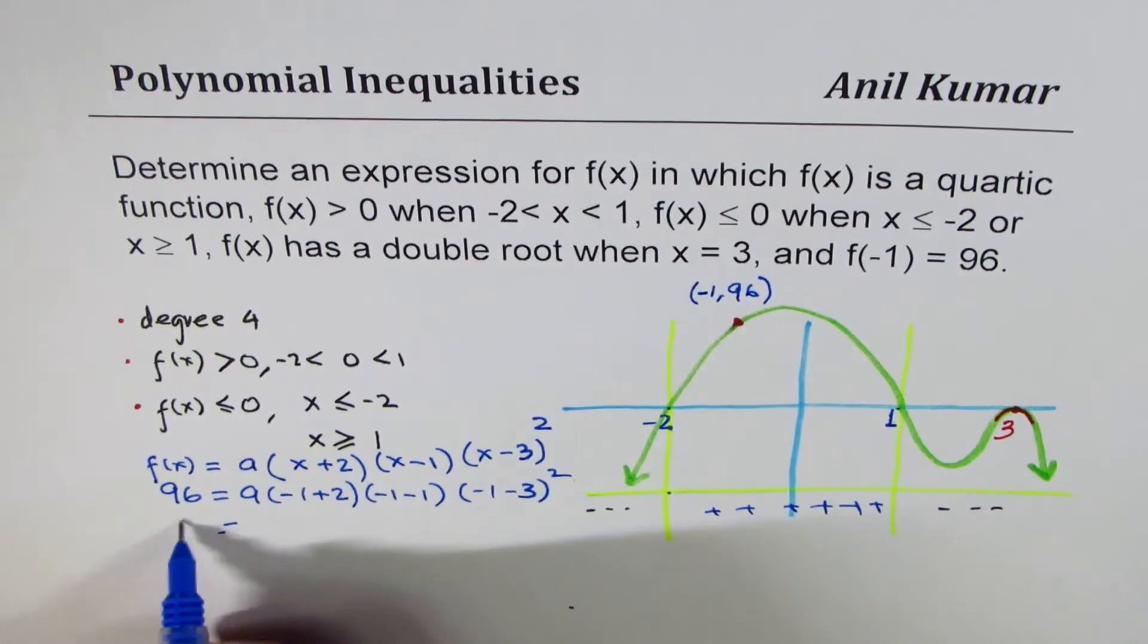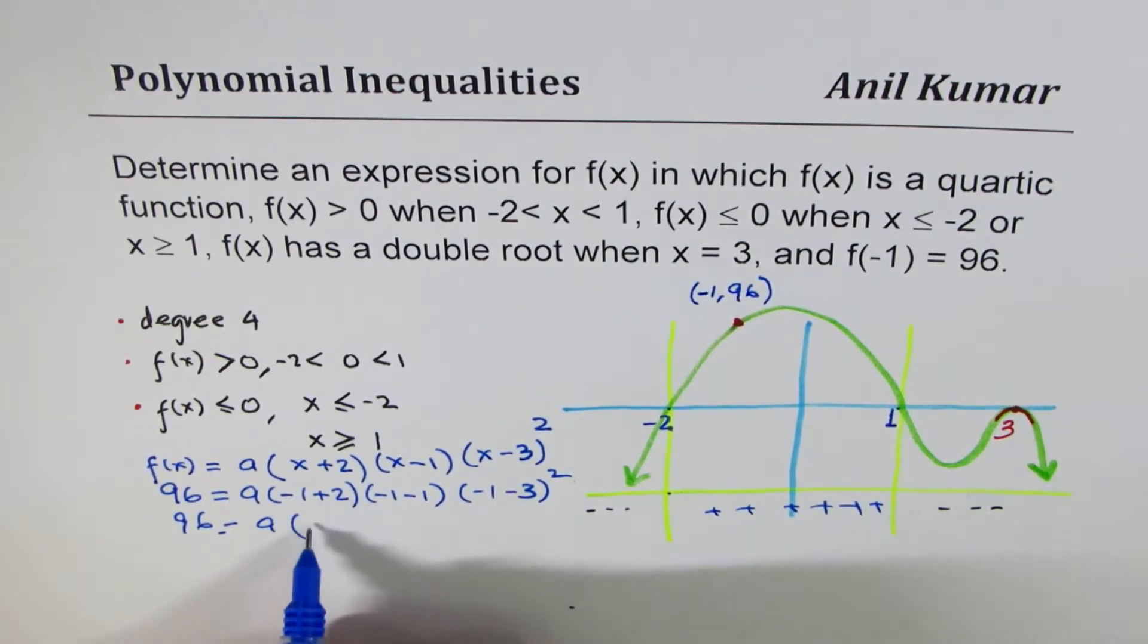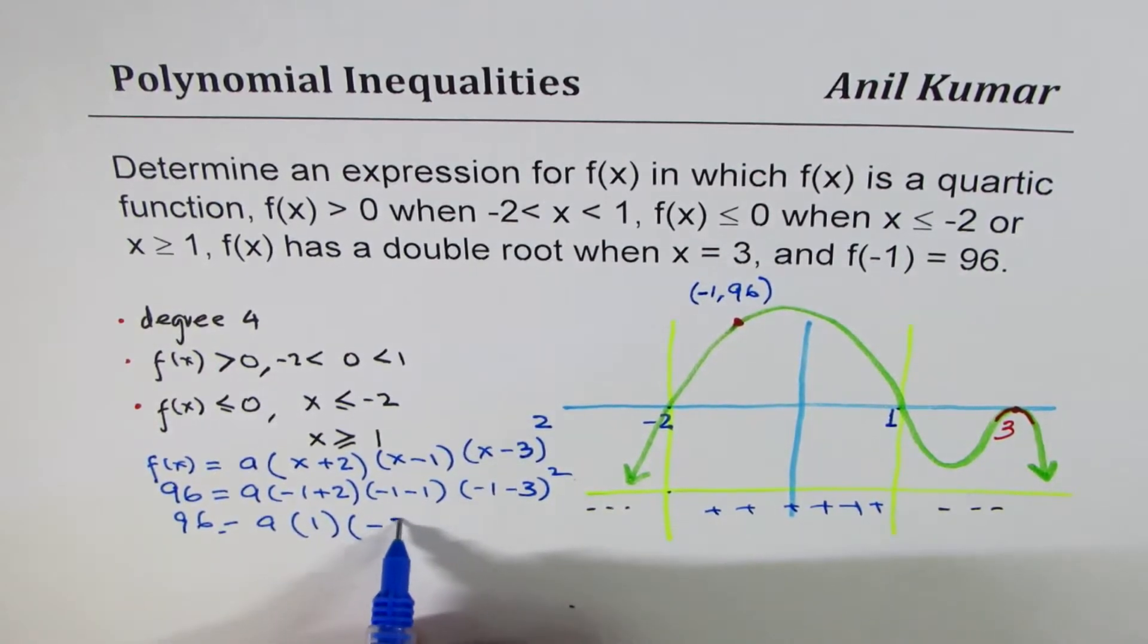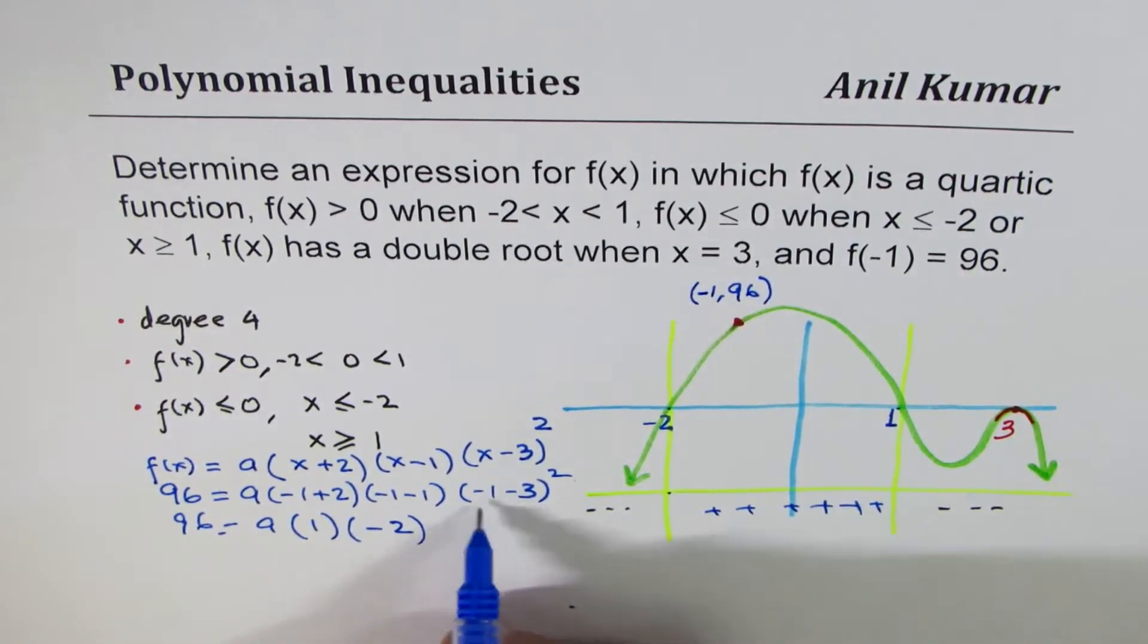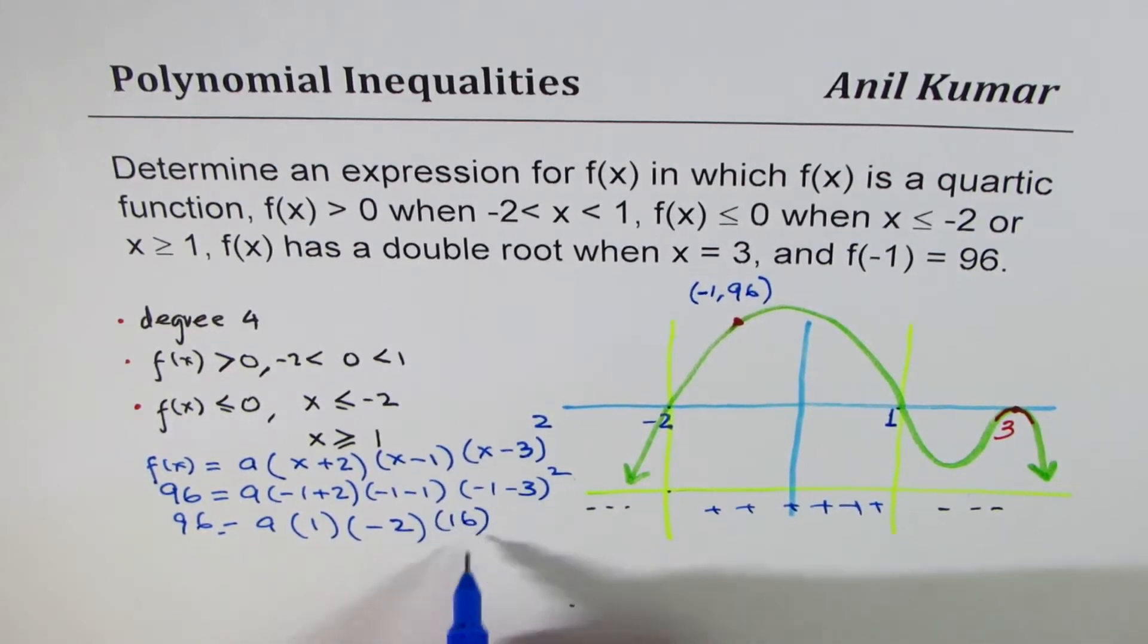So, that is 96 equals to a times (-1 + 2) is 1, (-1 - 1) is minus 2. And here, we get -4 square which is 16, correct?